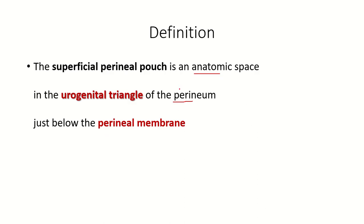The superficial perineal pouch is an anatomical space in the urogenital triangle of the perineum, just below the perineal membrane. Sometimes students feel difficulty understanding it, because to understand the superficial perineal pouch you need clear conception about the perineum, superficial fascia of the abdomen, the anatomy of external genitalia of the male, anatomy of the male urethra, and anatomy of the female external genitalia.